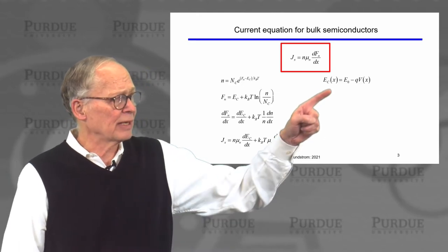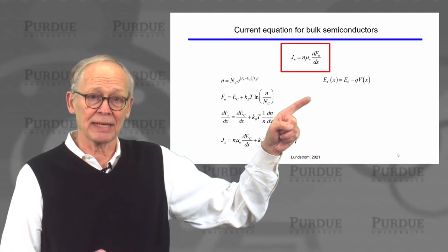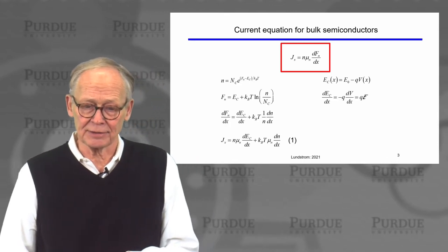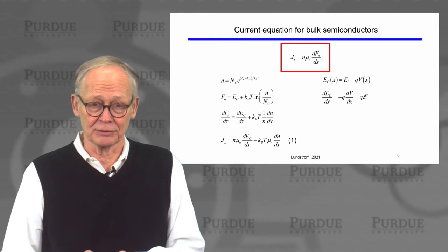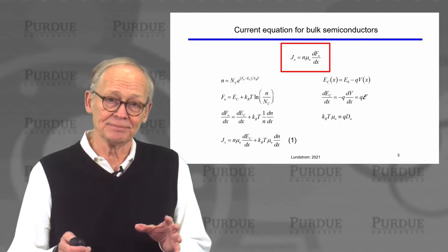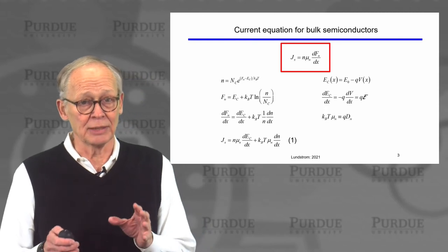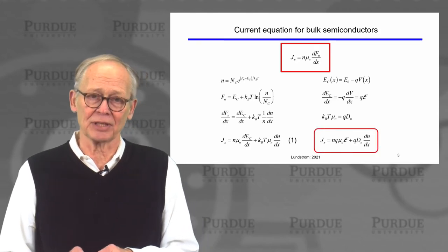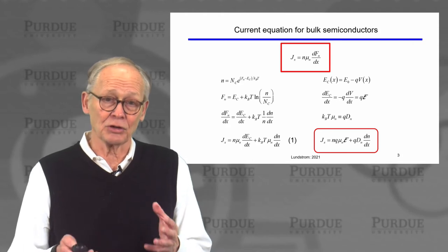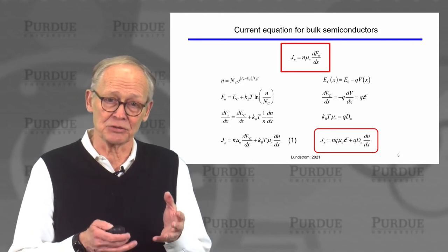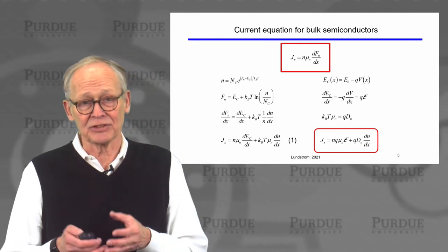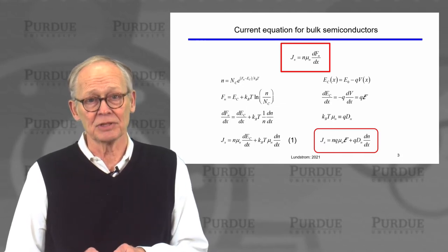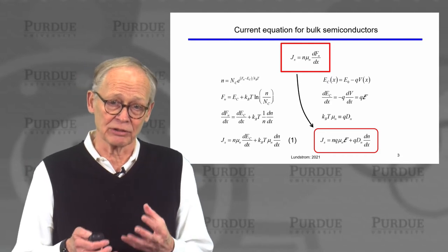Now if we work a little bit more, we recognize that the bottom of the conduction band goes down when the electrostatic potential goes up. Using that, we can take the gradient, and we find that what we have is q times the electric field. We can also define kt times mobility to be q times the diffusion coefficient, and we end up with a simple equation that is often the starting point for semiconductor device analysis. This is called the drift diffusion equation. The first term is the drift of carriers in a small electric field. The second term is the diffusion of carriers down a concentration gradient. That expression, the drift diffusion equation, follows from the much more general current expression.